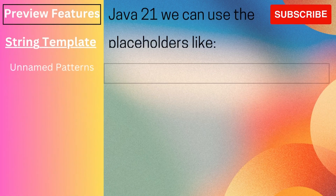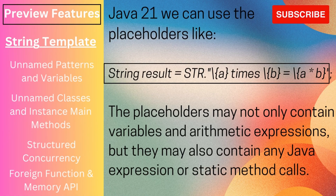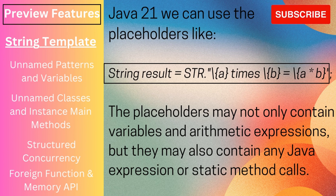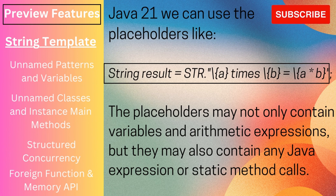Now let's discuss the preview features added in Java 21. Preview features are not yet ready for production usage; with a few more releases, once they are stabilized, they will be ready — just like virtual threads were added as preview in Java 19 and are now ready for production in Java 21.